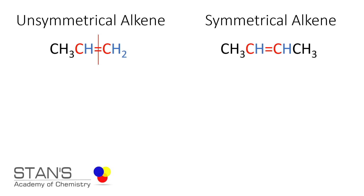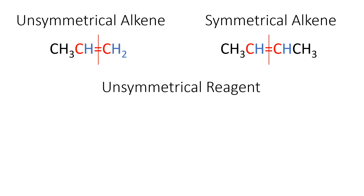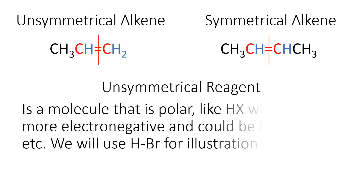2-butene is an example of a symmetrical alkene. If you draw a line across the double bond, on either side the carbon atoms both have one hydrogen atom. Therefore, it is a symmetrical alkene.